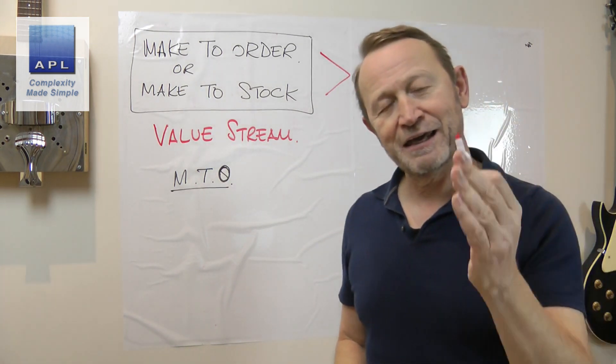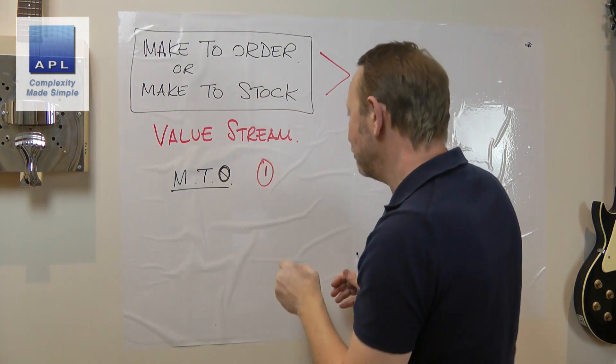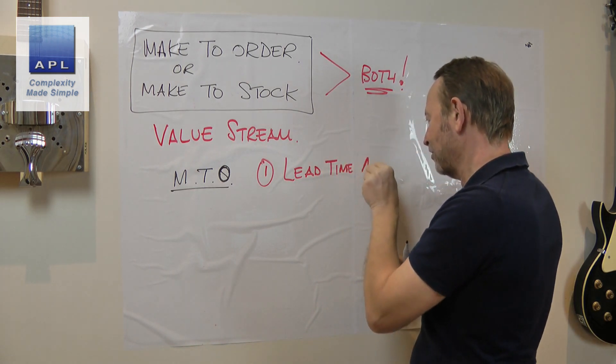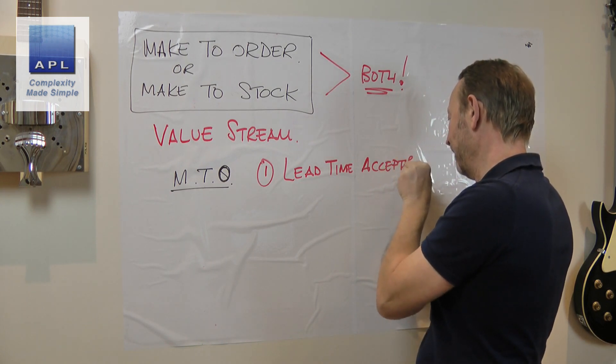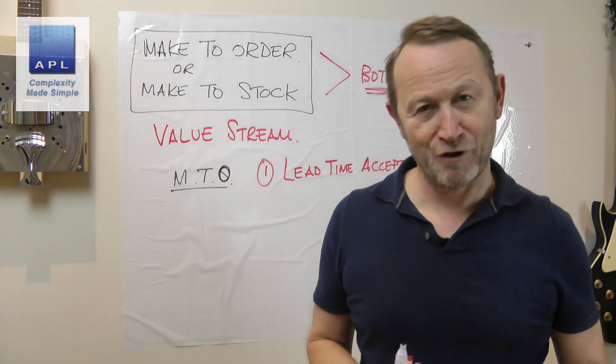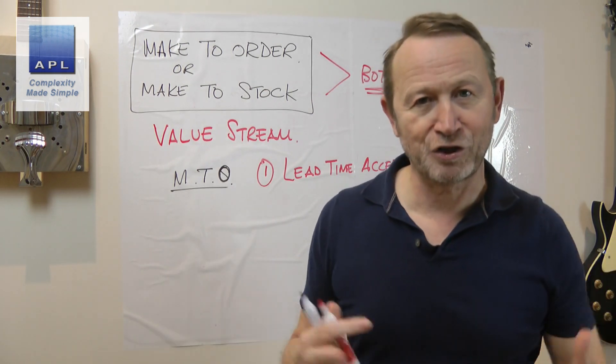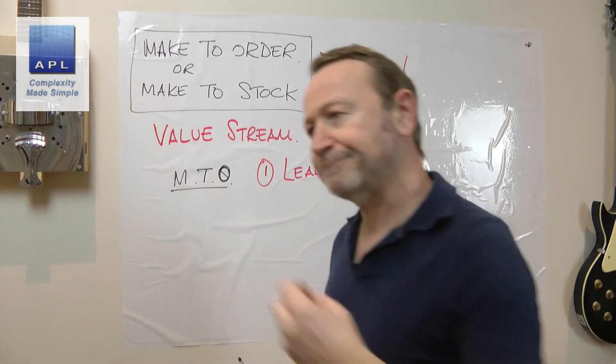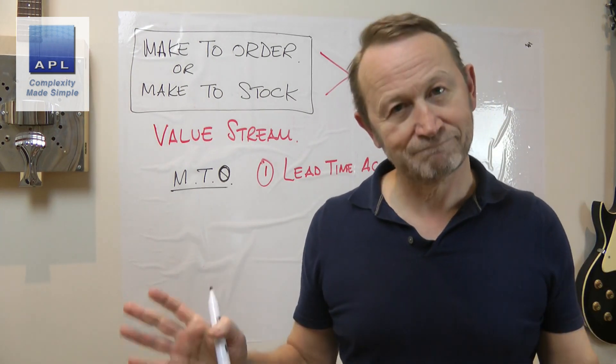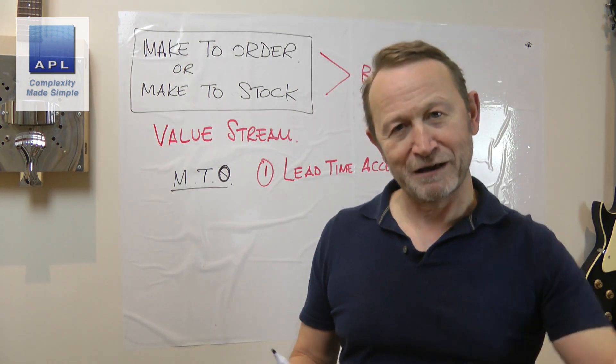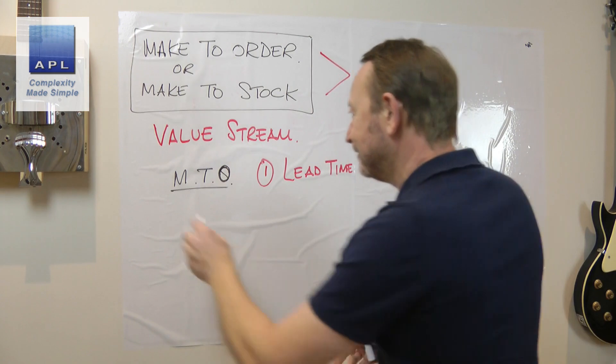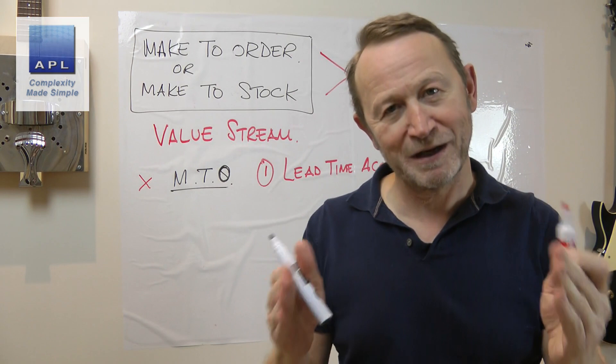If you are going to make to order, here are the requirements. Number one: manufacturing lead time is acceptable to the customer. So if you say I'm not going to do anything and I sit on my hands until an order arrives, then we'll schedule the order. It'll end up being in a queue which is, let's say, three weeks long. The customer gets the order within three weeks. If that's acceptable, that's okay. But if your customer wants the product in a week and you have a four-week lead time to manufacture it, you can't make to order.